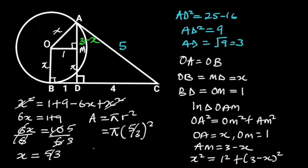5 over 3 squared is equal to 25 over 9. Hence, the area of the circle is 25 over 9 pi square units.